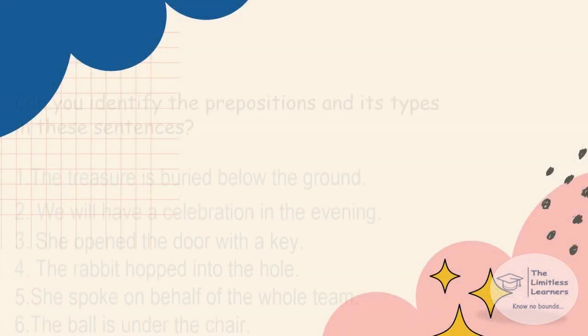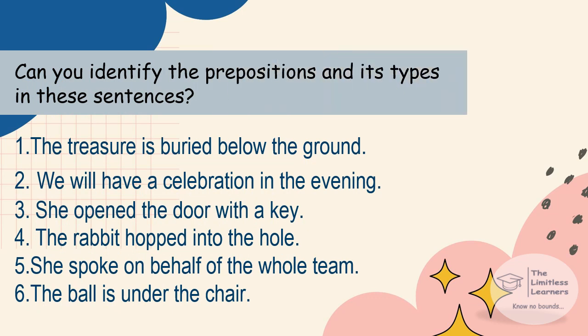Exercise time! Can you identify the prepositions and their types in these sentences? Let's read them together. One: 'The treasure is buried below the ground.' Two: 'We will have a celebration in the evening.' Three: 'She opened the door with a key.' Four: 'The rabbit hopped into the hole.' Five: 'She spoke on behalf of the whole team.' Six: 'The ball is under the chair.' Now let's see if you got the answers right!